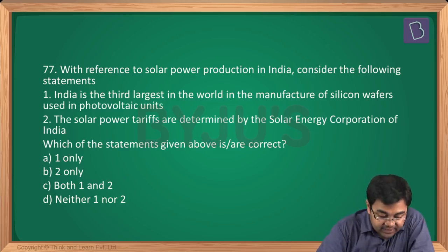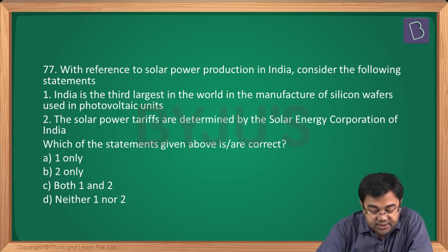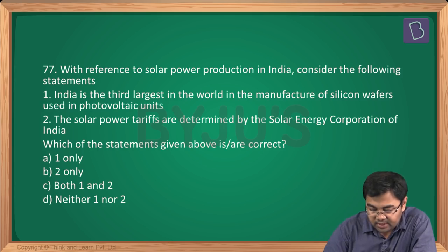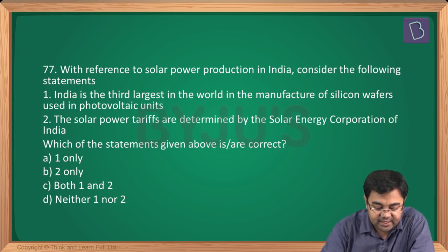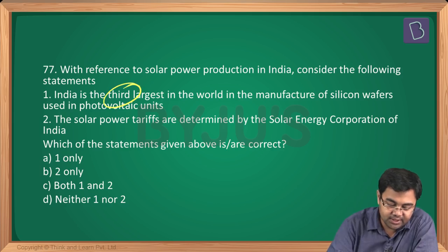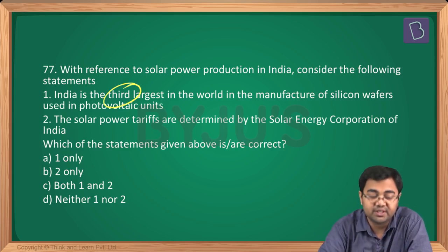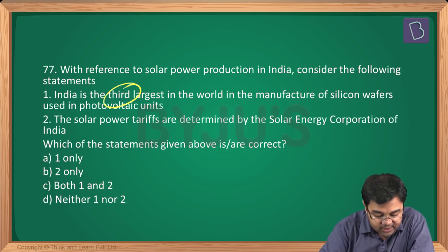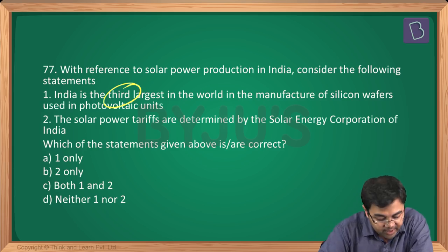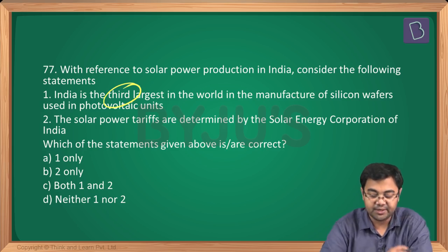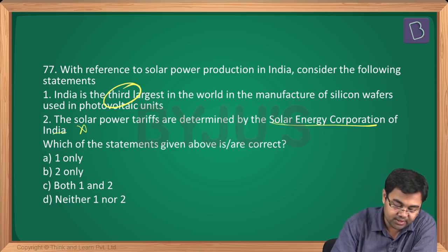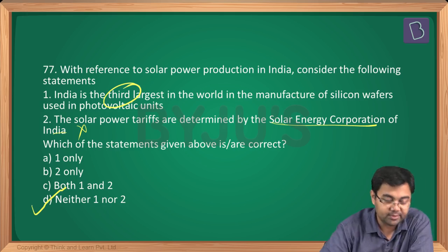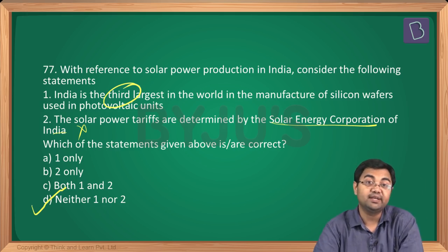Question number 77: with reference to solar power production in India — Statement 1 says India is the third largest — wrong. Statement 2 says solar power tariffs are determined by the Solar Energy Corporation of India — also wrong. So the correct answer is D: neither 1 nor 2.